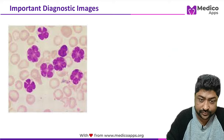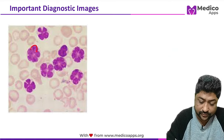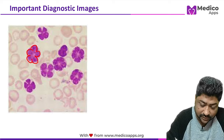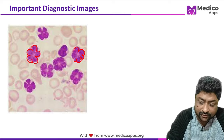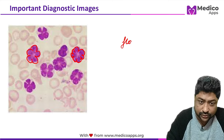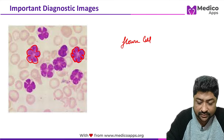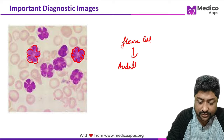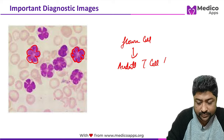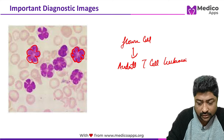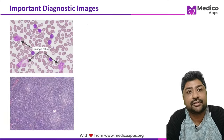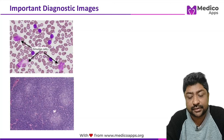The next image shows cells that look like a flower — these are called flower cells, seen in adult T cell leukemia. Easy to identify in the examination.